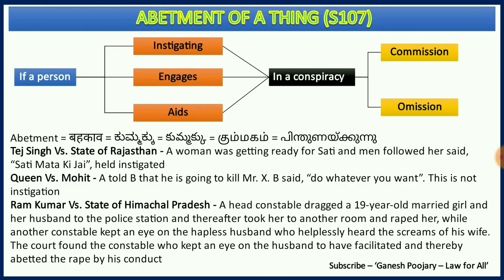The second case law is Queen versus Mohit. Here, A told B that he is going to kill Mr. X, and B said 'do whatever you want.' This is not an abetment by B because he neither instigated A, nor engaged him, nor aided him — and so it is not an abetment.